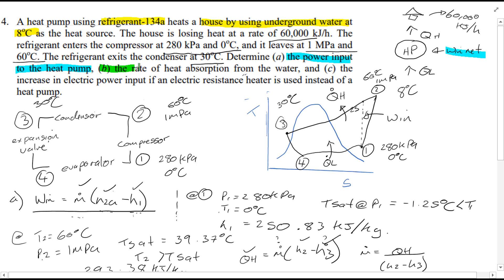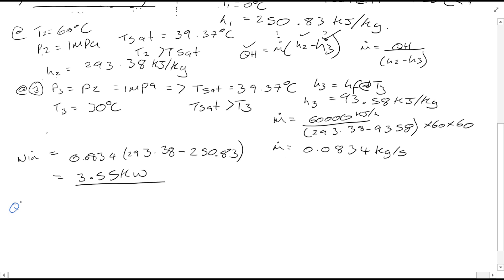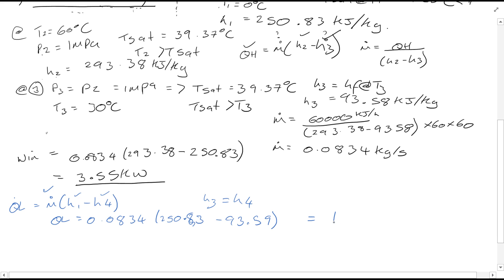For part B, we want the rate of heat absorption from the water — that is QL, occurring between points 4 and 1. QL equals mass flow rate times (H1 minus H4). We have the mass flow rate already. It's also important to note that process 3 to 4 is isenthalpic, so H3 equals H4. Substituting all values, QL equals 13.11 kilowatts of heat removed from the cold water.